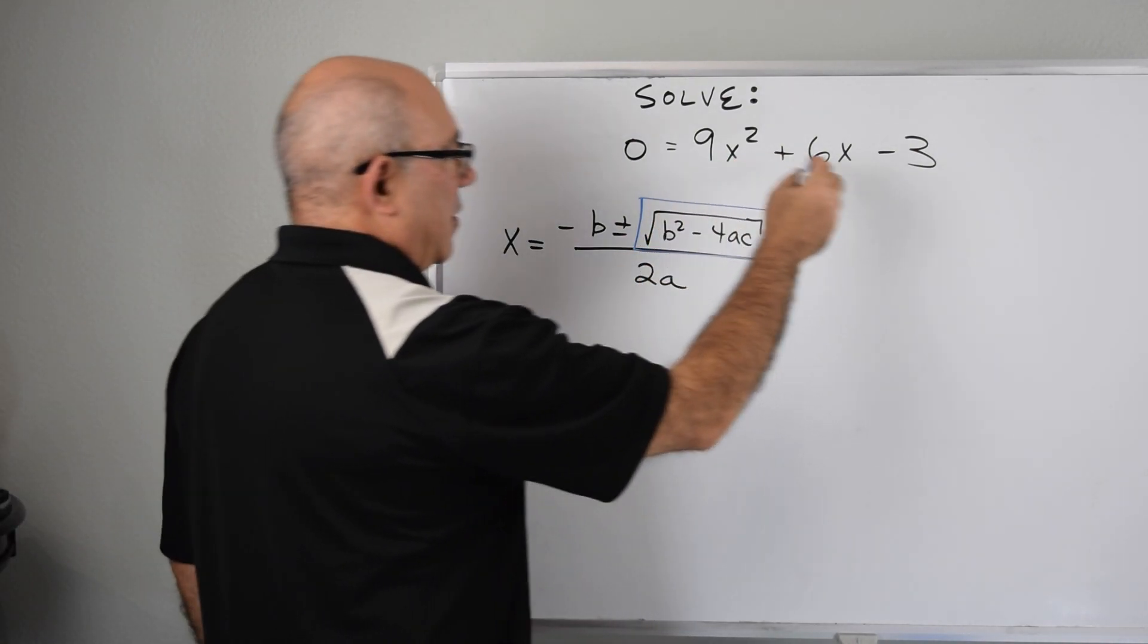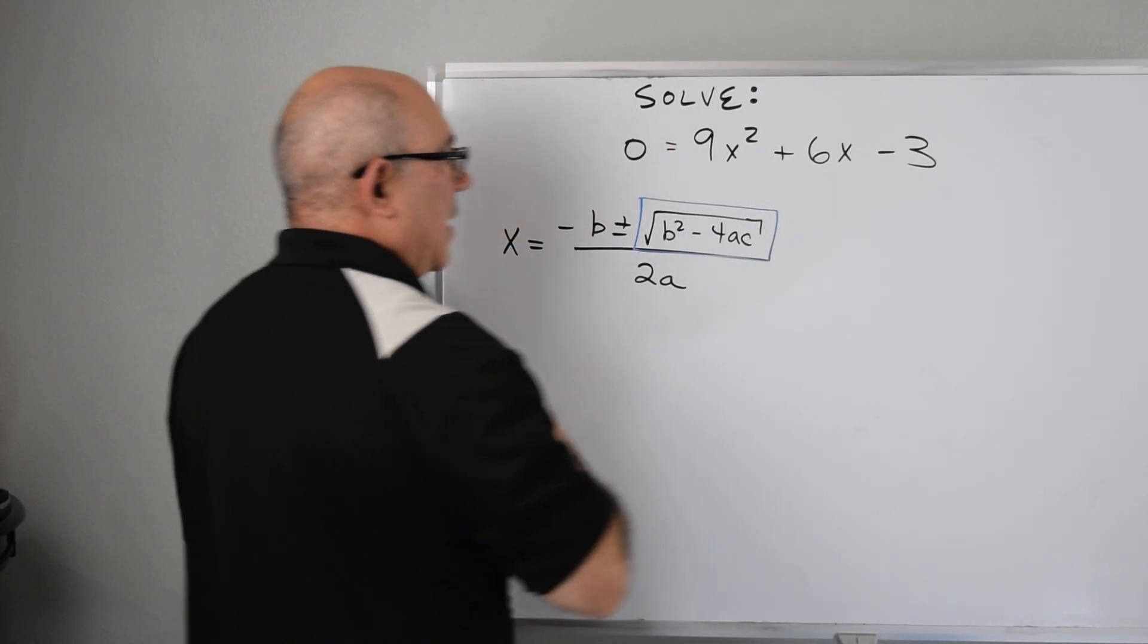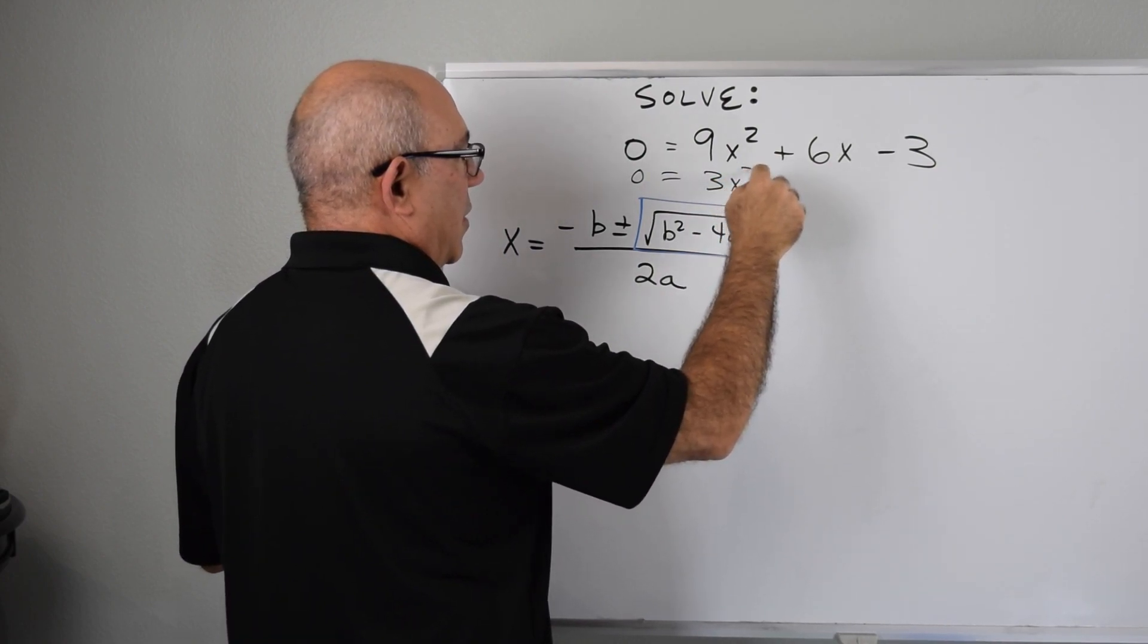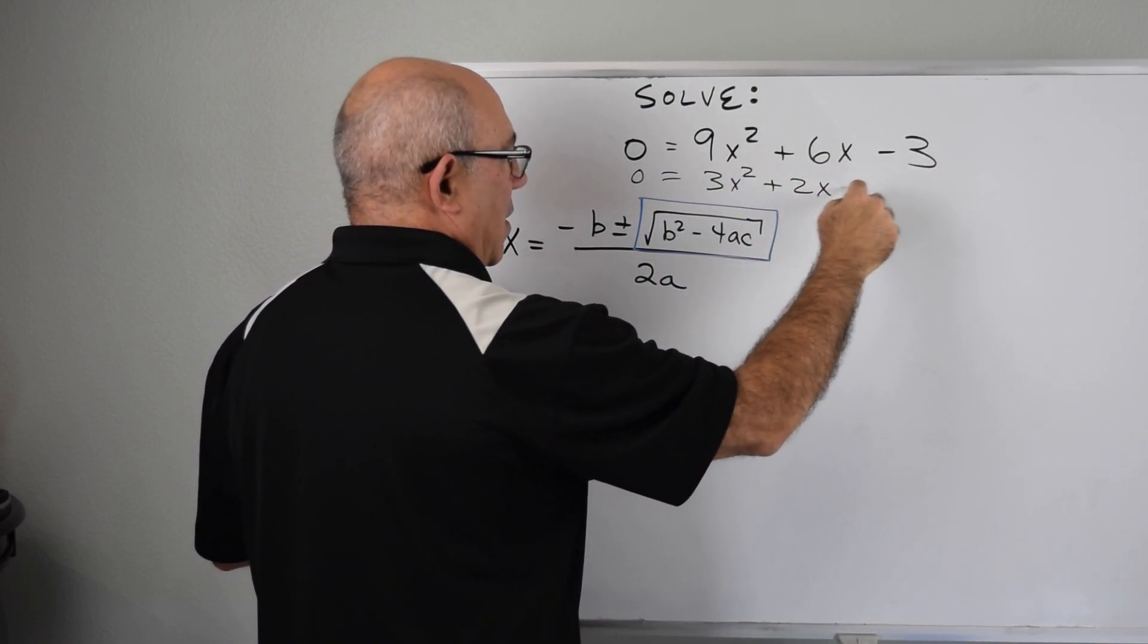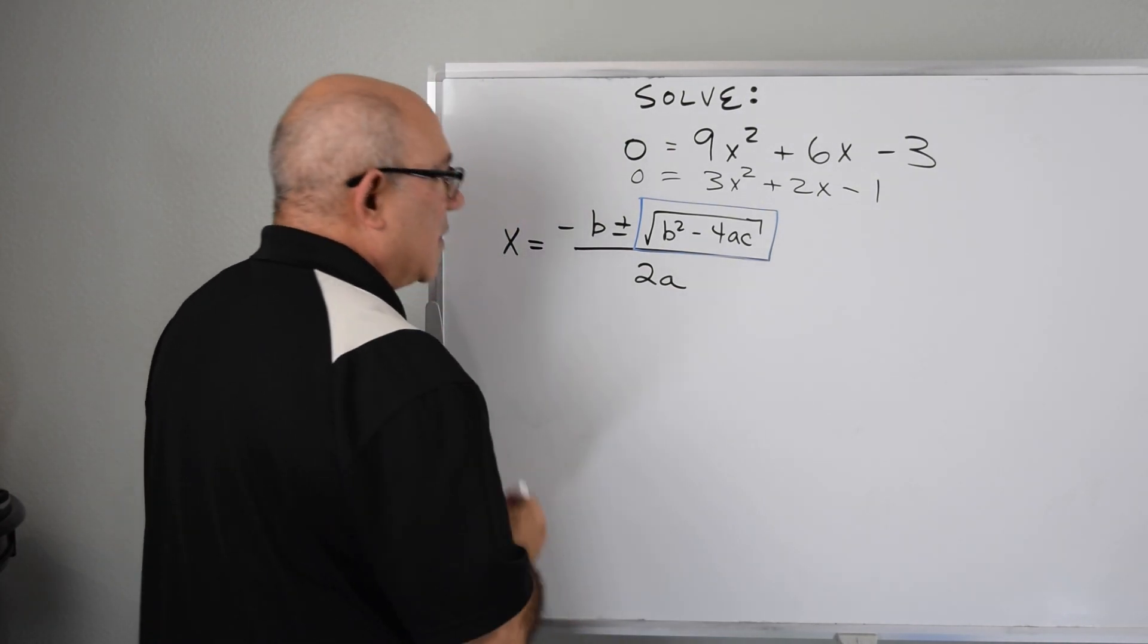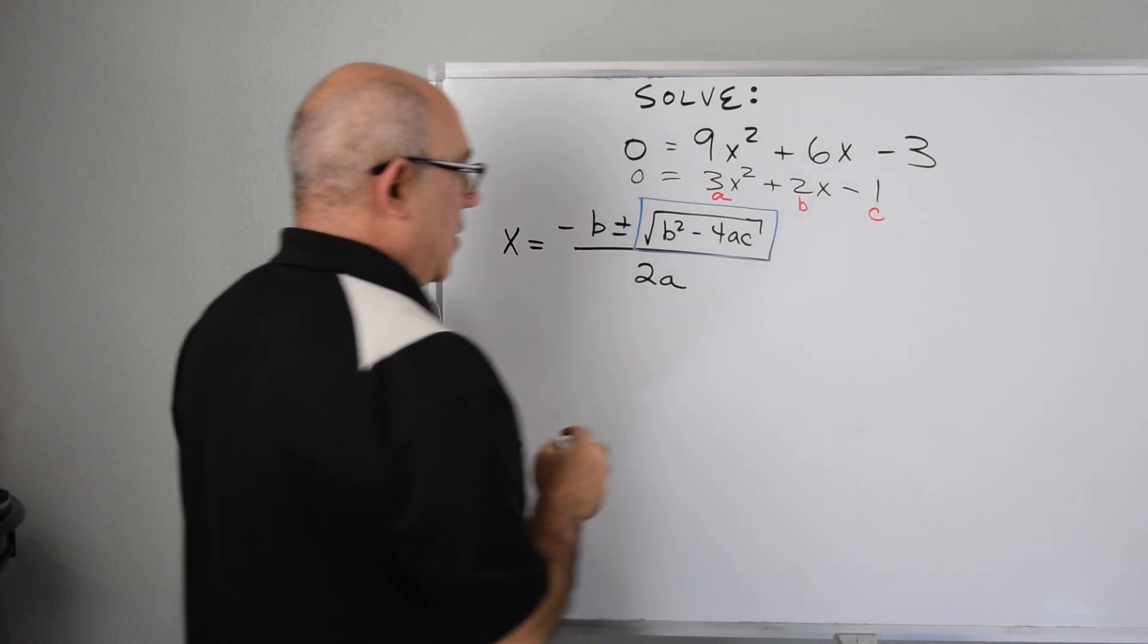So first we're going to simplify. We're going to divide through by three and make this the same equation basically, but much easier to handle. 3x squared plus 2x minus 1. And in this equation, this will be a, this will be b, and this will be c.